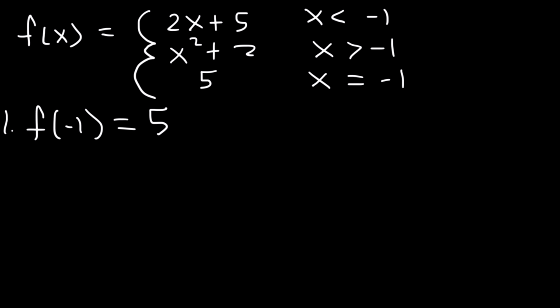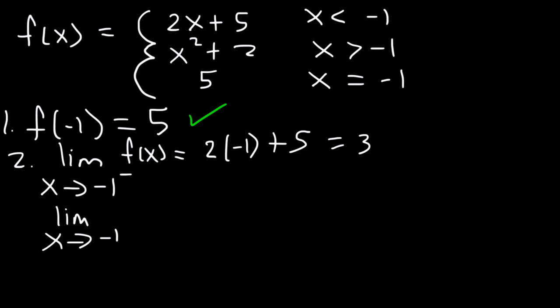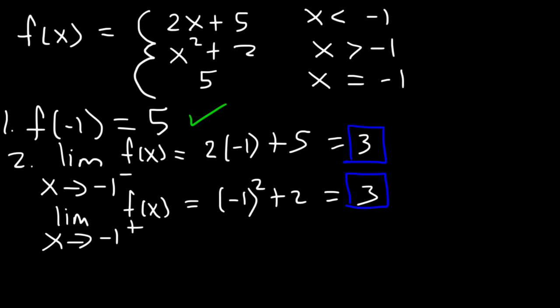Step 2: prove that the limit exists. Find the limit as x approaches negative 1 from the left. Since x must be less than negative 1, we use 2x plus 5: 2 times negative 1 plus 5 is negative 2 plus 5, which equals 3. Now find the limit as x approaches negative 1 from the right. Since x is greater than negative 1, we use x squared plus 2: negative 1 squared plus 2 is 1 plus 2, which equals 3. Because both sides equal 3, the limit exists.